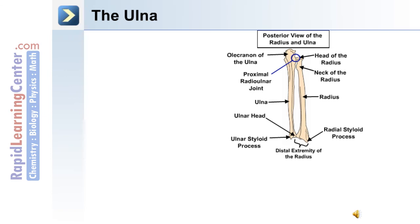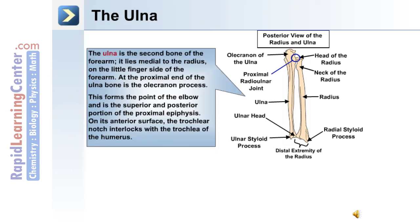The second bone of the forearm is the ulna bone, depicted in this posterior view. The ulna bone at the proximal end has the olecranon, which is the elbow. It also articulates with the radius at the proximal radial ulnar joint. At the distal end is the ulnar head and the ulnar styloid process. The ulna lies medial to the radius, on the little finger side of the forearm. The olecranon process forms the point of the elbow and is the superior and posterior portion of the proximal epiphysis. On its anterior surface, the trochlear notch interlocks with the trochlea of the humerus.